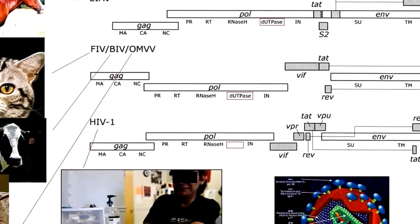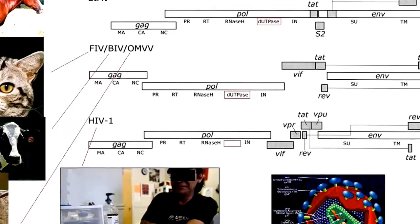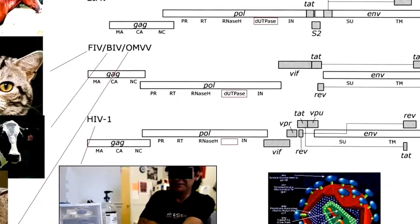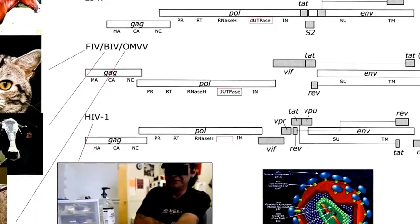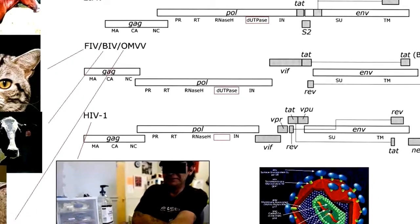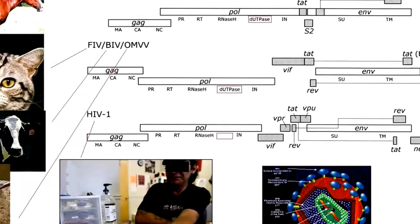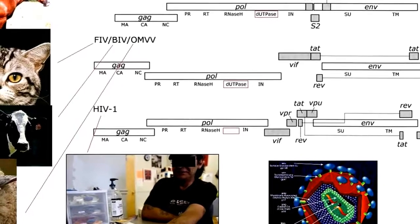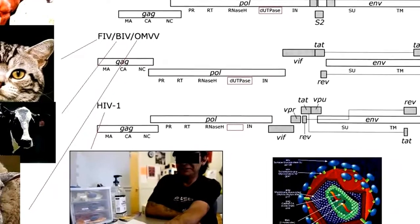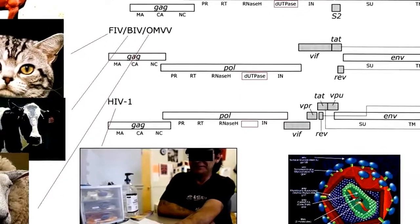HIV is a lentivirus on the basis of its genome and life cycle. It's not all that unusual for the lentiviruses. It infects immune cells, primarily CD4 positive T cells and macrophages. The other lentiviruses pursue similar, if slightly different, life cycles. There are lentiviruses that infect cats, goats, horses, sheep, cows, and monkeys.